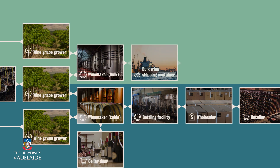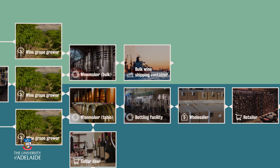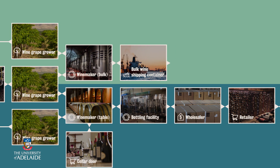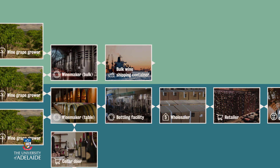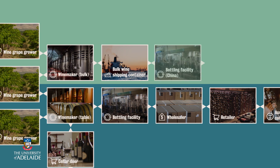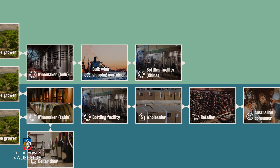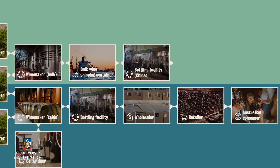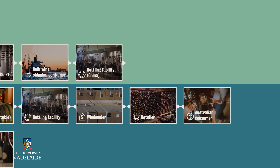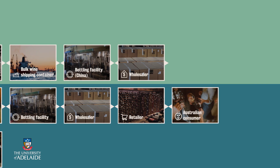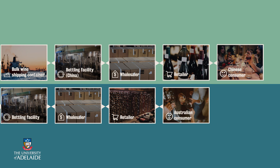To keep the freight costs down, the wine is likely to be shipped overseas in large bladders, not bottles. The wine business may then secure the services of a contract bottler in country or utilise their own offshore bottling facility. Once bottled, the bulk wine would then follow a familiar but separate pathway to market through wholesalers, agents and multiple retailers to find its way to the Chinese consumer.